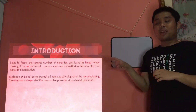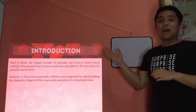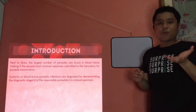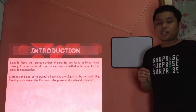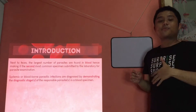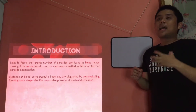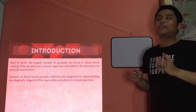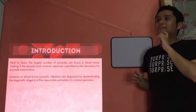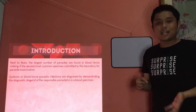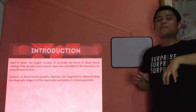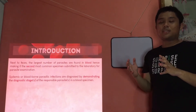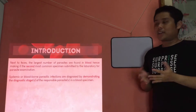Systemic or blood-borne parasitic infections are diagnosed by demonstrating the diagnostic stages of the parasites in the blood specimen. Still the same as with fecal smears — we diagnose through the demonstration of their respective stages. So similar with blood specimens or blood-borne parasites, we identify them through their different stages that we see in the blood specimen.